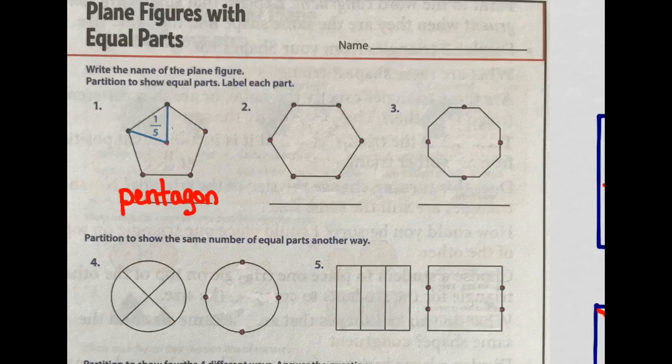If you said five, then we know it is a pentagon. That step is done. Now, let's do step two. We're going to partition to show the equal parts. They help us out with these dots here. Do you see all these dots? We're going to connect those. Let's just start from the middle and radiate outward, dot to dot, like that. Now, we should have five equal parts.